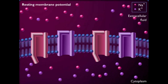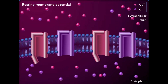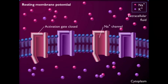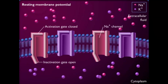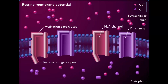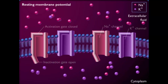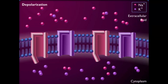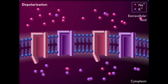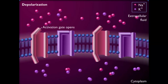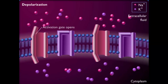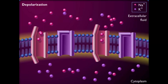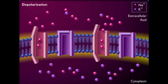When the cell membrane is at its resting membrane potential, the activation gates of the voltage-gated sodium ion channels are closed and the inactivation gates are open; voltage-gated potassium ion channels are also closed. Depolarization is initiated by a stimulus which makes the membrane potential more positive, causing the voltage-gated sodium ion channels to start to open. As threshold is reached, many sodium channels open and sodium ions diffuse across the membrane, causing depolarization.